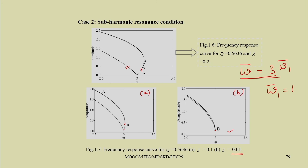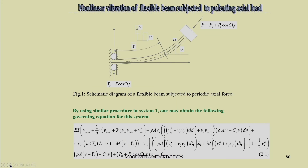In the sub-harmonic case, two saddle-node bifurcation points can be observed — one stable and one unstable branch. This demonstrates different responses for the simple base-excited cantilever beam under simple resonance and sub-harmonic resonance conditions.